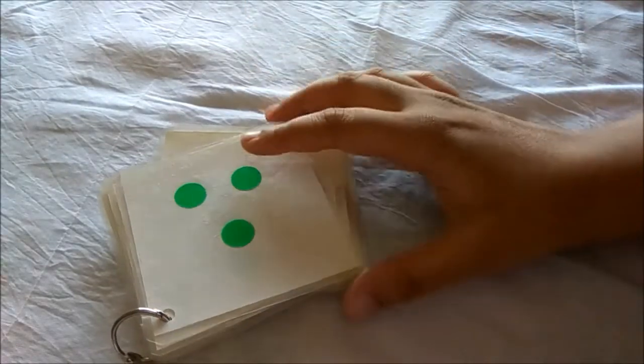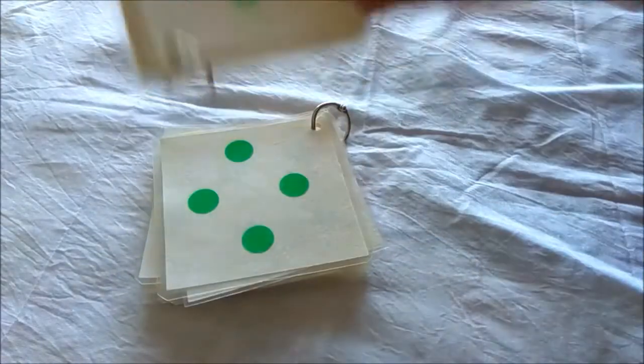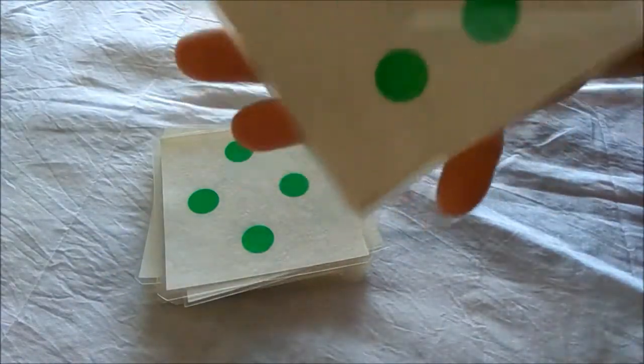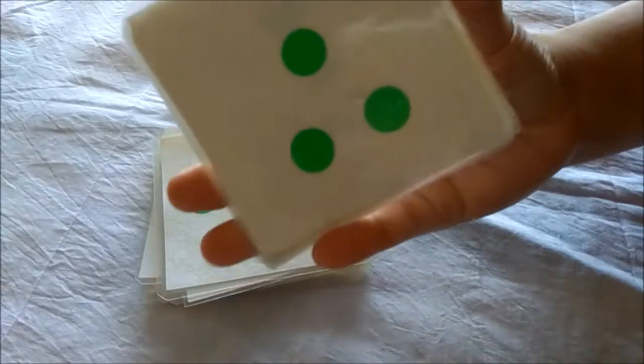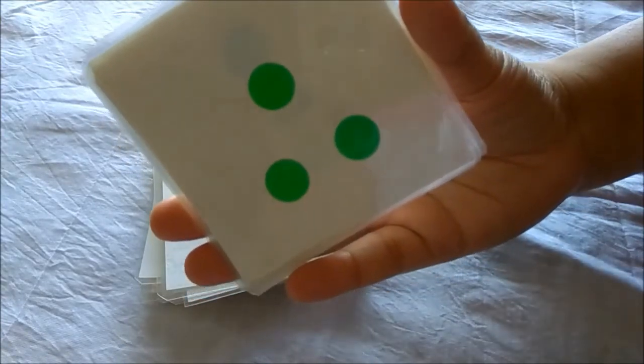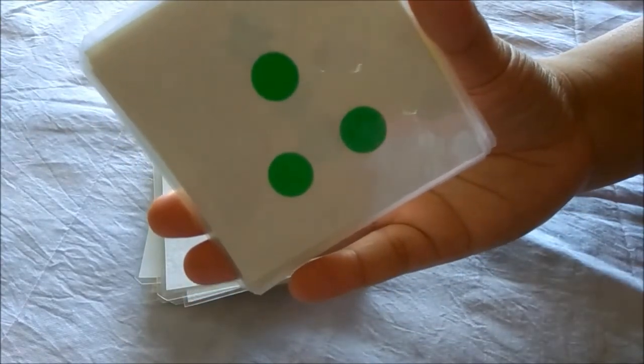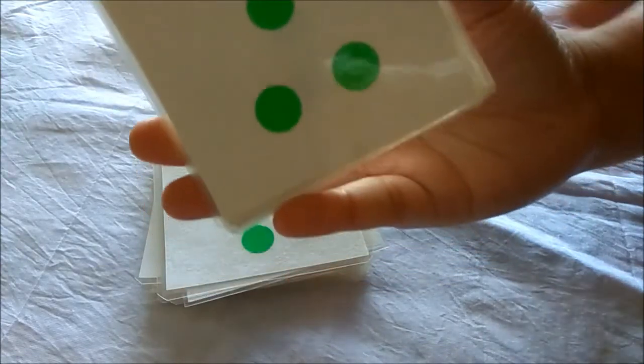Also, you can do variation in these activities. Like you can ask the kid to say one more or one less than the number that represents on the flash card. So if this is the number 3, then you can ask the child tell me a number that is one more than the number on the flash card.